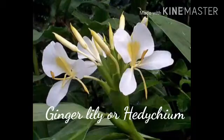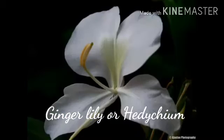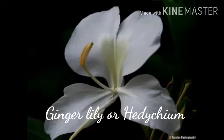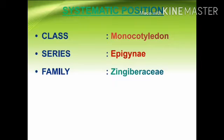Ginger lily, also called Hedychium, produces beautiful flowers that are used in garlands and other decorations. Now let us go through the systematic position of the family. The class is Monocotyledon, and the series is Epigynae. There is no subclass or orders specified for this family.